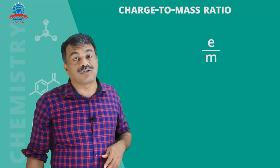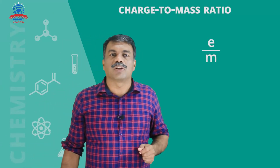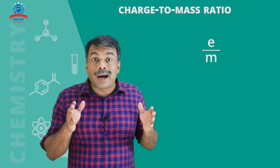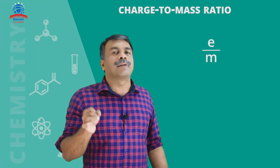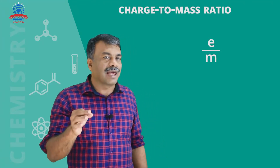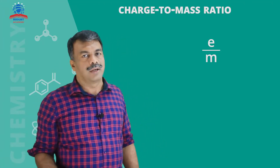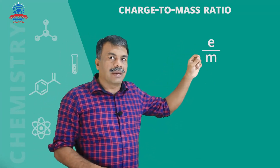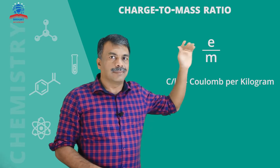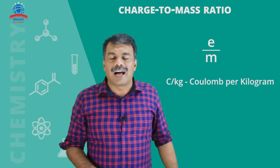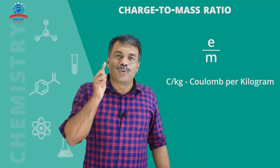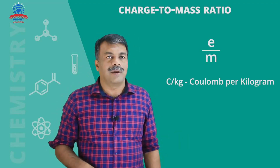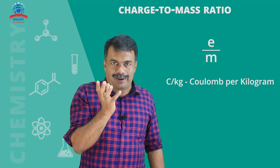His attempt was to calculate the e by m value — the charge to mass ratio. He wanted to determine how much charge there is per unit mass for the particles in cathode rays.